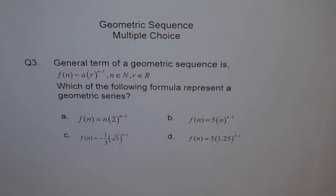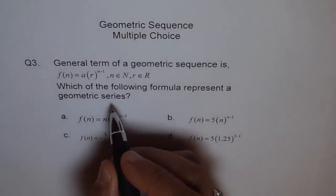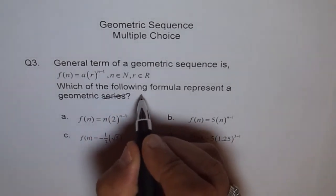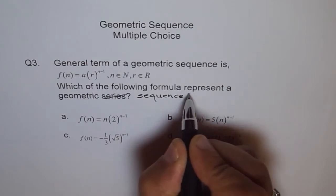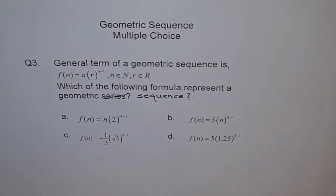Which of the following formula represent a geometric series? It should be geometric sequence. Do you know the difference between geometric series and geometric sequence?